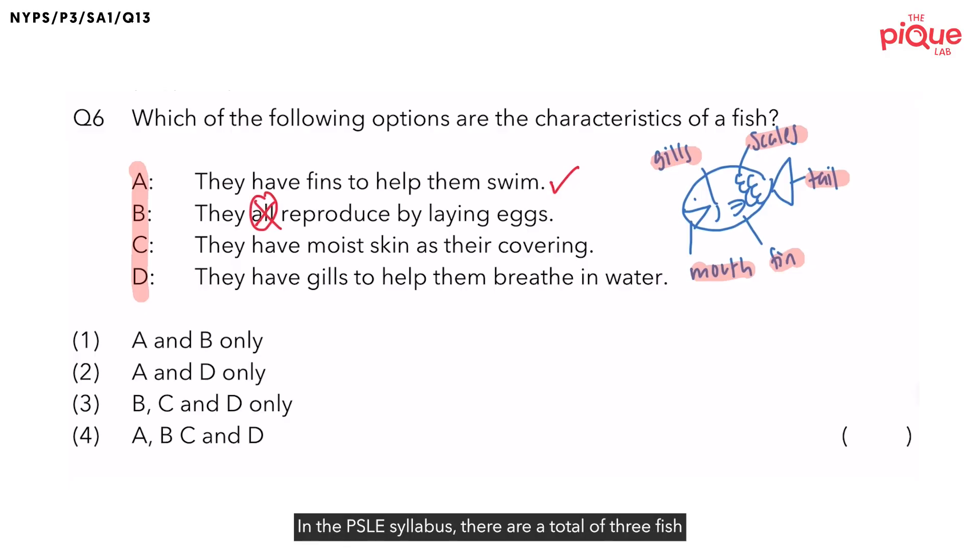In the PSLE syllabus, there are a total of three fish that give birth to young alive. And these three fish go to the same school. Let me give you a hint. They all go to a girl's school. And this school is known as Methodist Girl School. Or in short, MGS.